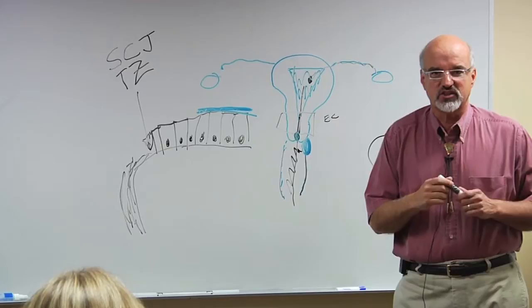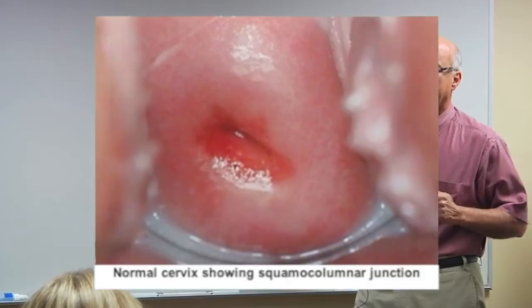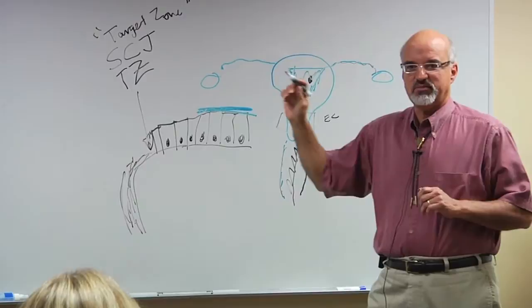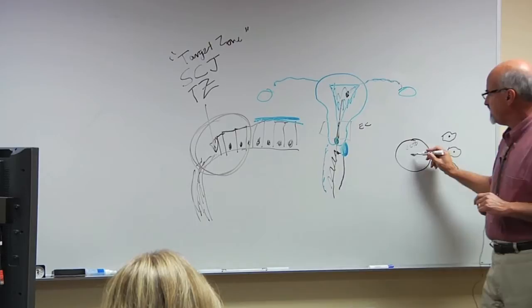Does it make sense? Squamous, columnar, where they come together is the squamous columnar junction. You'll hear me oftentimes refer to it as the target zone. Instead of transformation zone TZ, the target zone - this is the target that should be aimed for when a pap test is collected. It's just inside, usually just inside the opening of the os.